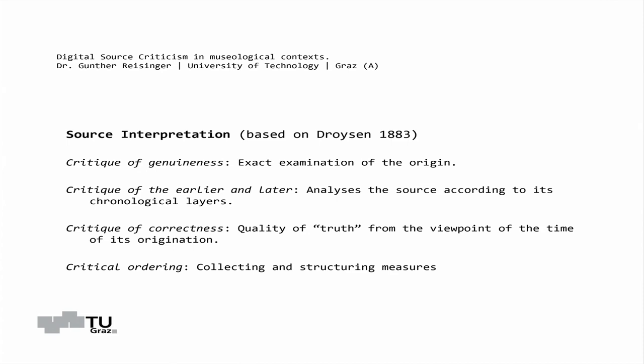Applied to digital source criticism, this analytical step corresponds to an exact examination of the origin of the source. The critique of the earlier and later tries to determine what alterations have taken place or have been performed on the transmitted material — this step analyzes the source according to its chronological layers. The complete spectrum of possibilities from digital manipulation with respect to digital reproduction could be analyzed in this step of assessment of authenticity.